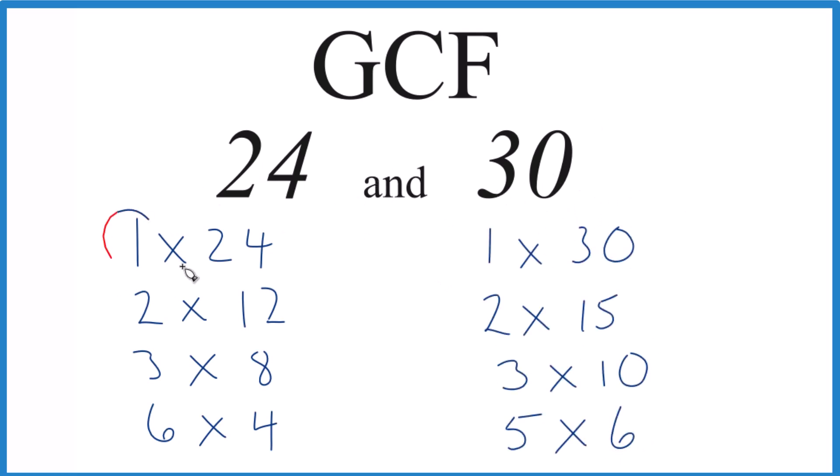So let's find the greatest common factor. One, that's a common factor. Two is a common factor. Three, that's a common factor. And then we're looking here, we have six, that's a common factor. And I think six might be the greatest common factor.